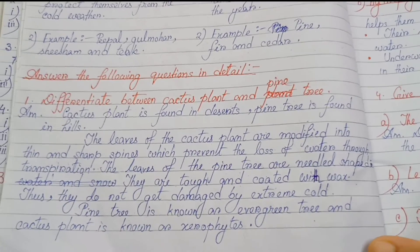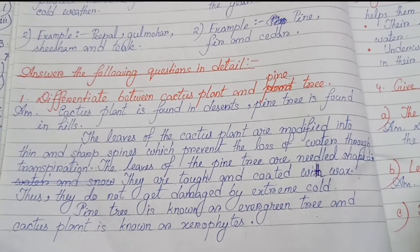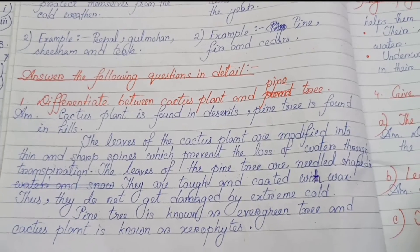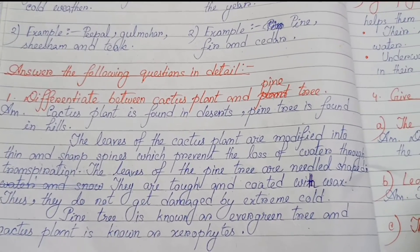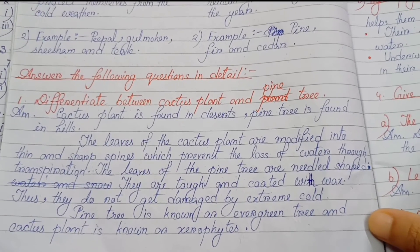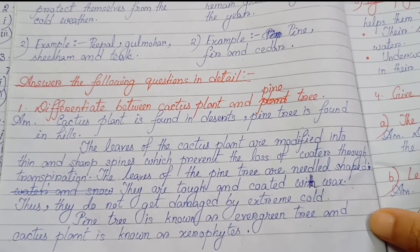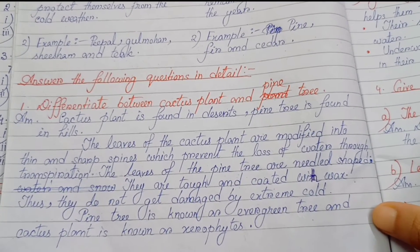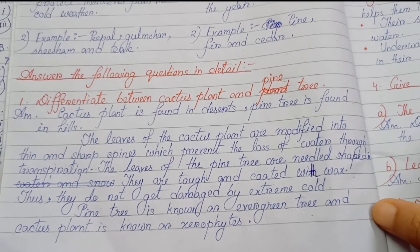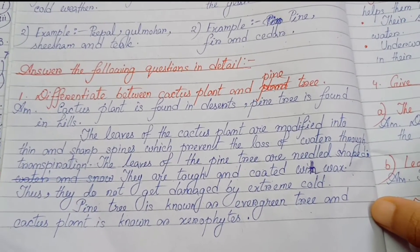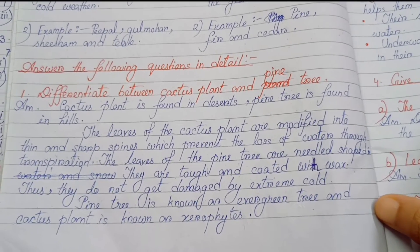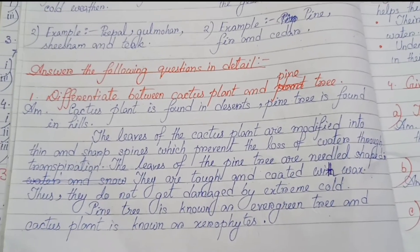Differentiate between a cactus plant and a pine tree. Cactus plant is found in deserts; pine tree is found in hills. The leaves of the cactus plant are modified into thin and sharp spines, which prevent the loss of water through transpiration. The leaves of the pine tree are needle-shaped — they are tough and coated with wax, so they do not get damaged by extreme cold. Pine tree is an evergreen tree and cactus is a xerophyte.